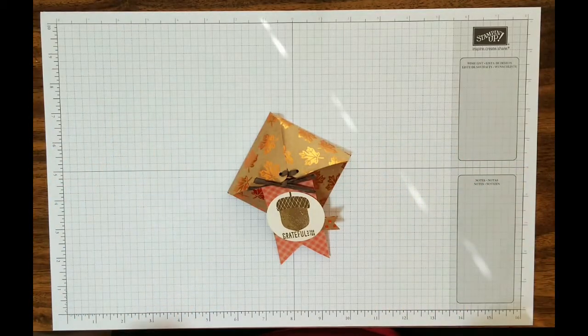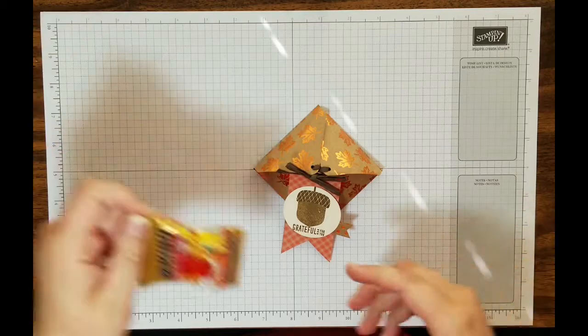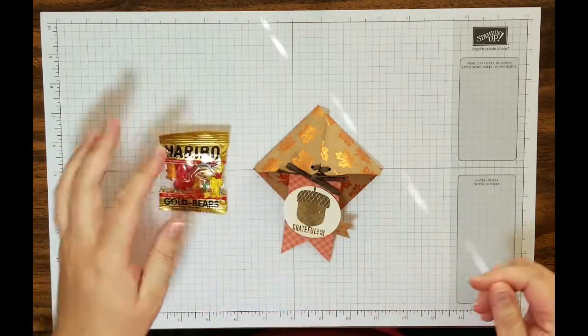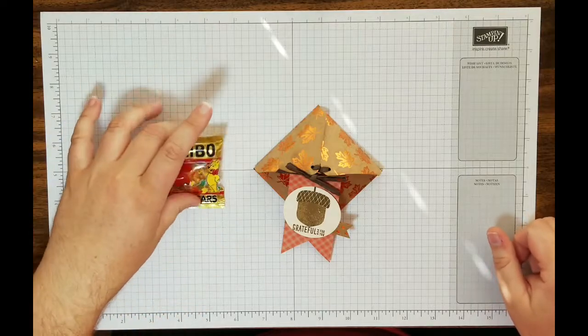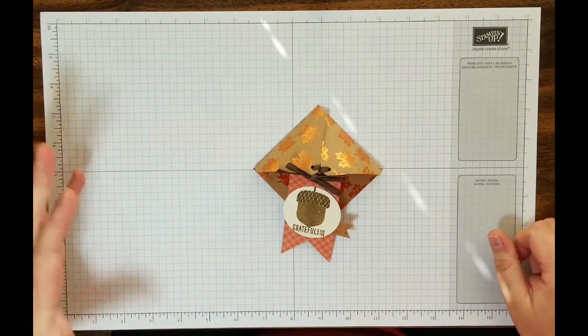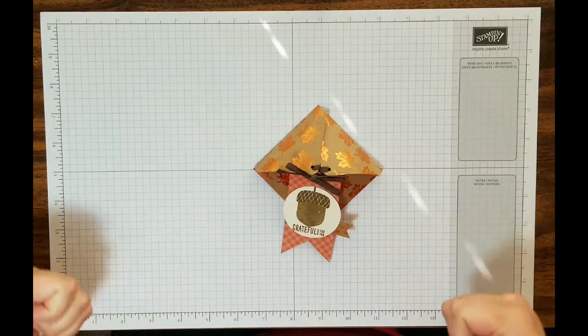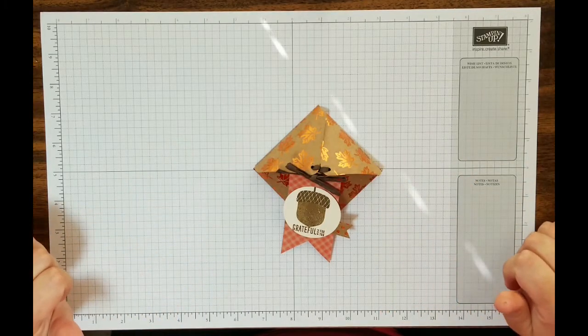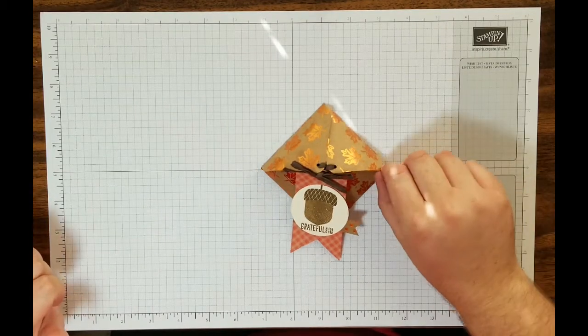Alright, back to our project today. This is our project and it is a treat holder. And inside our little envelope thing is actually a little mini Harbo's gummy bears. Mostly because I love gummy bears. I originally thought a pack of trail mix would fit in here. Really cute, really sweet, good fall thing to do. I didn't have any trail mix in the house. So I went with Harbo gummy bears. Alright, so let's go ahead and get started.